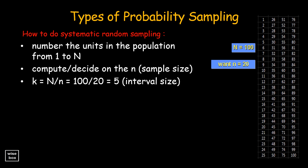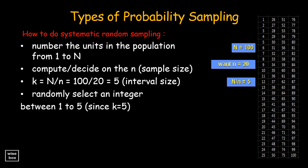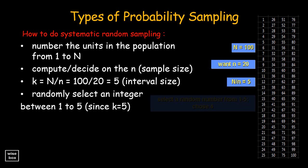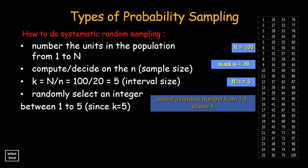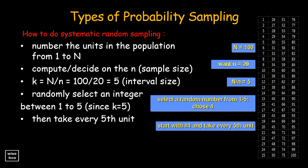In this case, the interval size k is equal to 100 divided by 20, which equals 5. Now, select a random integer from 1 to 5. In our example, imagine that you randomly chose 4. Now, to select the samples, start with the fourth unit in the list, and take every fifth since k equals 5.